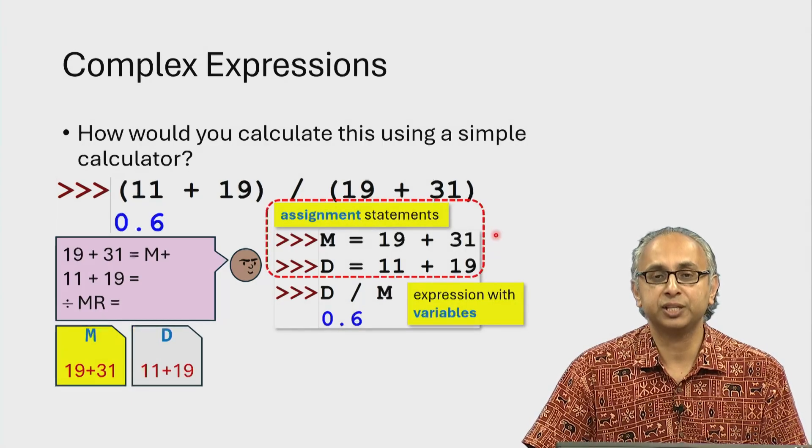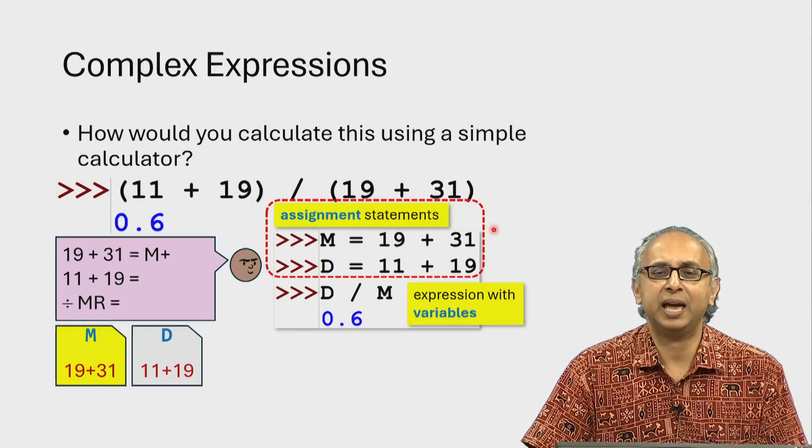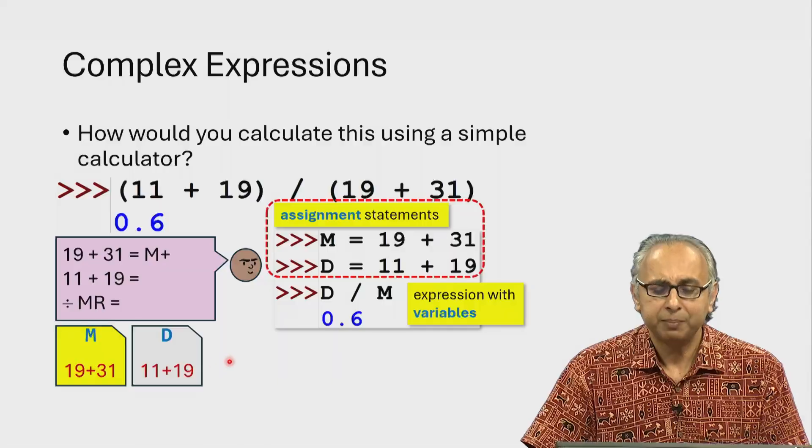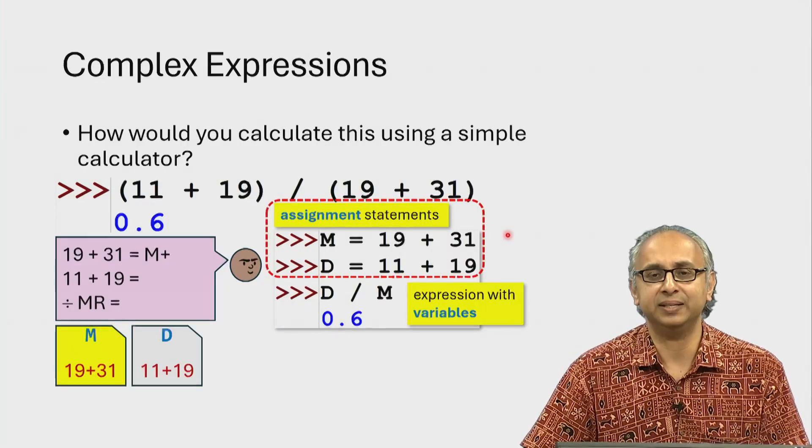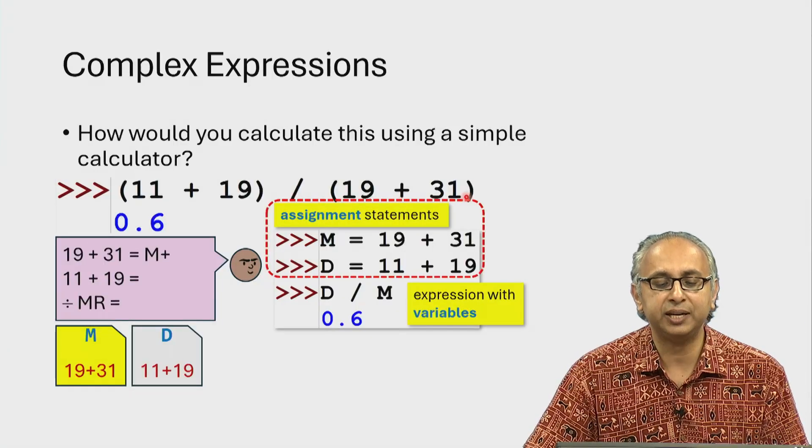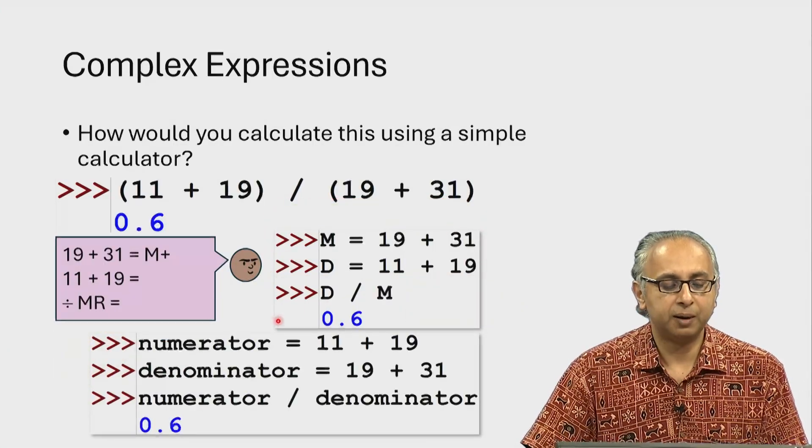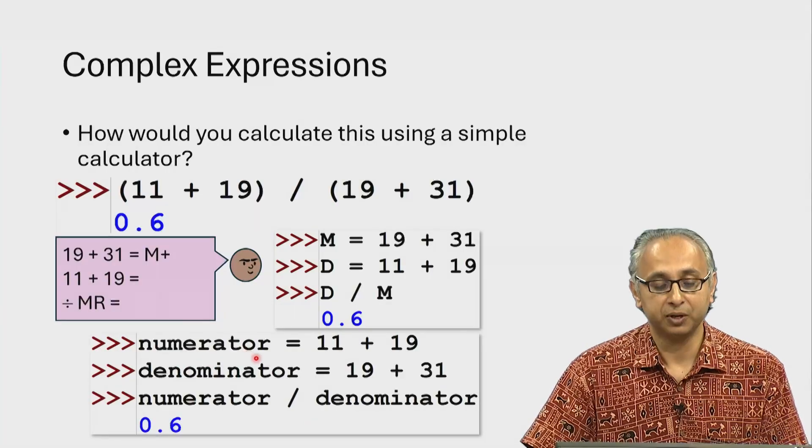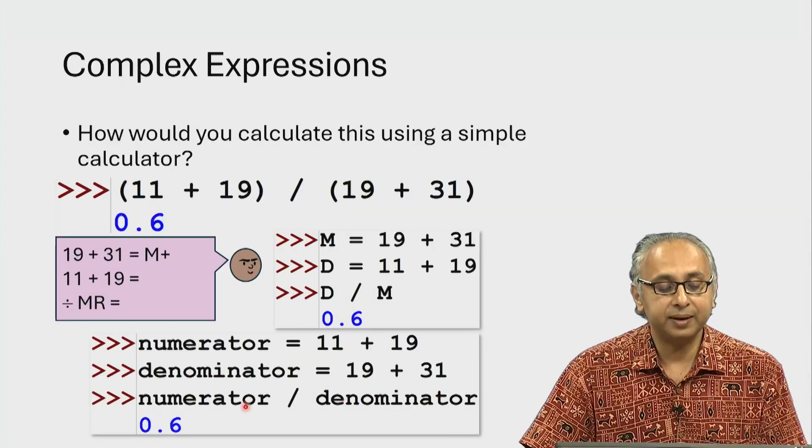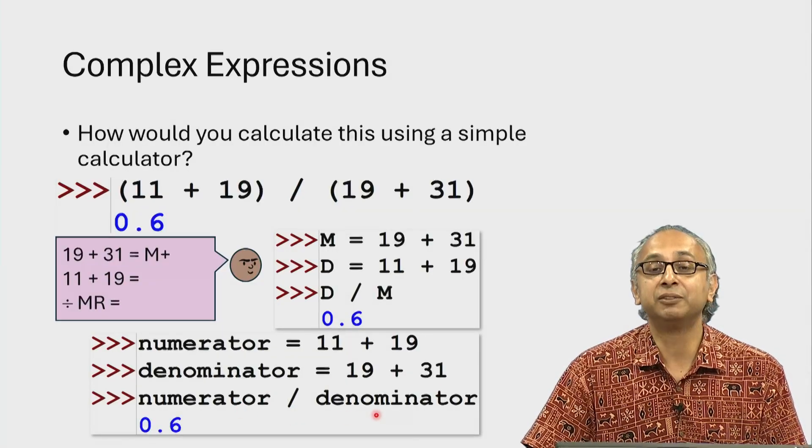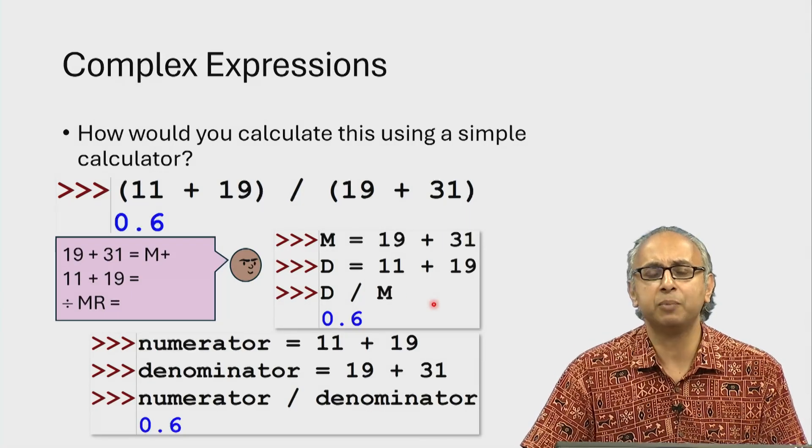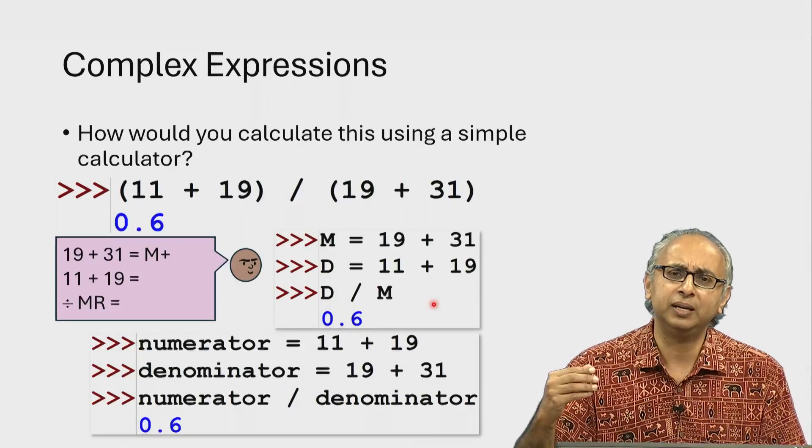Now this expression, this calculation uses these values M and D and I have used similar names to what you have seen in a calculator. But, there is no reason to call these M and D. You can give them more meaningful names. In this case, since we are calculating this ratio, why don't we use a more meaningful name like numerator for the top of the ratio and denominator for the lower part and then we will calculate the expression numerator divided by denominator. That is much more readable than D divided by M where we would have to remember that D is actually the numerator.